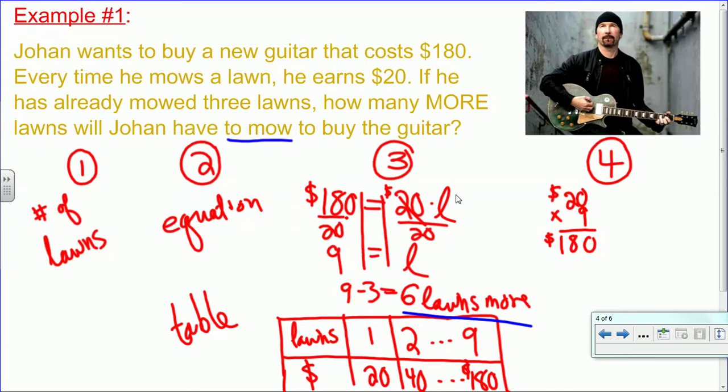If you go the equation route, you need to carry out the plan. To do that, we might write an equation like $180 equals $20 times the number of lawns. So he's going to get $20 for each lawn, but we need that total to be equal to 180. To solve this, we'll divide both sides by 20, and then we'll get the total number of lawns is 9. Now we need to remember the question, and he's already mowed 3, so 9 lawns total minus the 3 he's already done. He needs 6 lawns more.